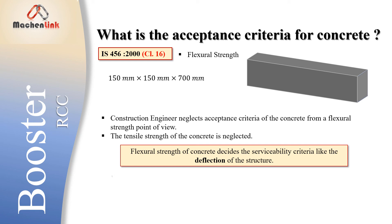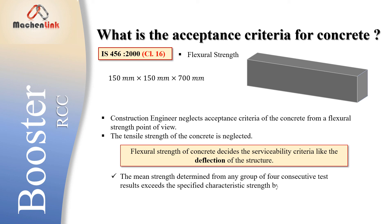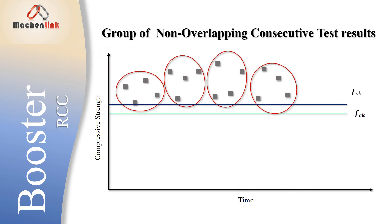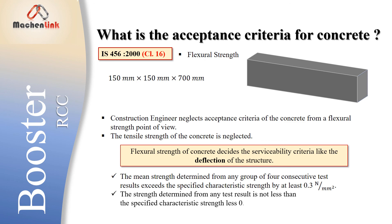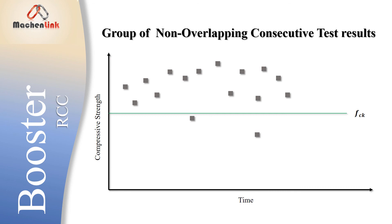There are two criteria for flexural strength. First, the mean strength determined from any group of four consecutive test results must exceed the specified characteristic strength by at least 0.3 N/mm² — meaning the mean should be greater than FCK plus 0.3. Second, the strength from any individual test result should not be less than the specified characteristic strength minus 0.3 N/mm², meaning no test result should fall below FCK minus 0.3 N/mm².